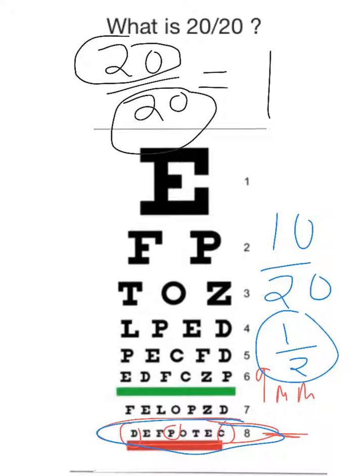So a person with 10 over 20 sees about 1 half, their visual acuity is 1 half of a person that's 20 divided by 20, which makes sense. If you're 10 feet away and you can read number 8, your vision is not as good as if you were 20 feet away and read number 8.